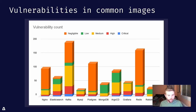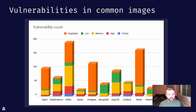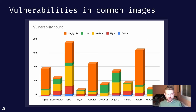Just to give you a feeling about what the different vulnerability counts look like — for the sake of this presentation, we took a few well-known applications and container images, and you can see that today these container images are shipped with tens, if not nearly hundreds, of vulnerabilities by the time you're deploying them in your cluster. Vulnerabilities are not good and we need to limit them, but it's sometimes very hard to fix them or wait for fixes from external vendors. Therefore it is very important to understand which of them are really posing a threat or risk to your environment and which of them are not.